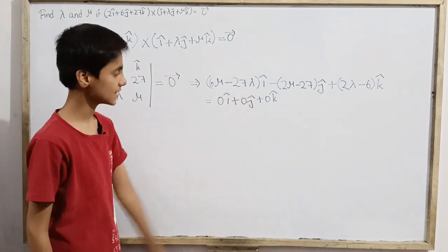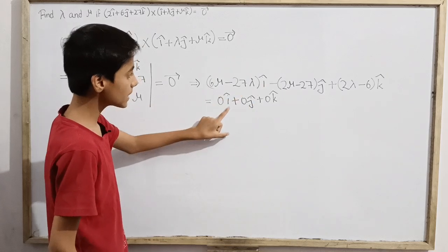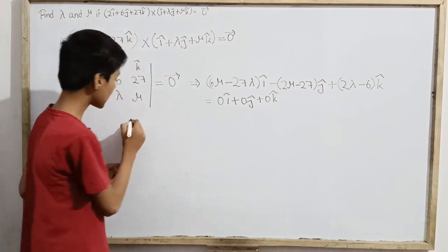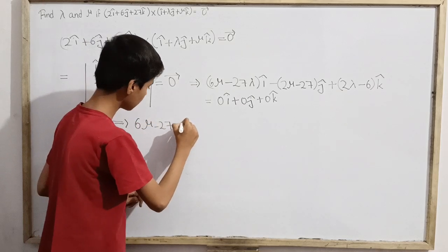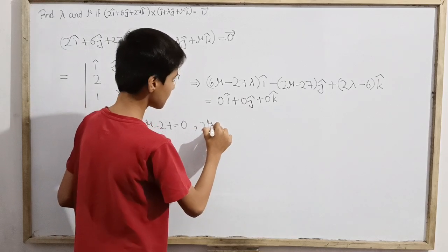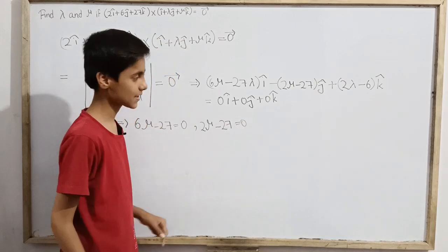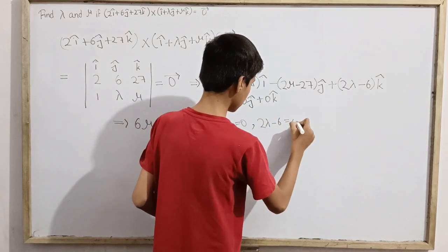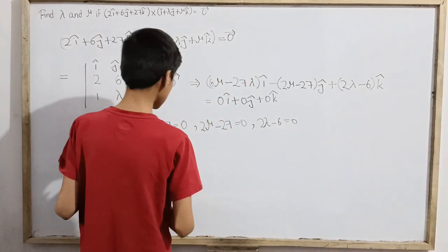So that's zero i cap plus zero J cap plus zero K cap. In the three that's zero, zero, and zero. Now what will happen by this? We can easily be solving the problem. So i cap comparison with i cap, j cap and J cap and K cap. So we can write some mathematical equations. Like 6 mu minus 27 lambda should be zero. After that, we can be getting that 2 mu minus 27 should also be zero, as 27 minus 2 mu is also zero. And 2 lambda minus 6 equals also zero.